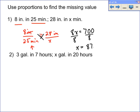Which is 87.5. So if something's moving at a rate of 8 inches per 25 minutes, that means it can go 28 inches in 87.5 minutes.